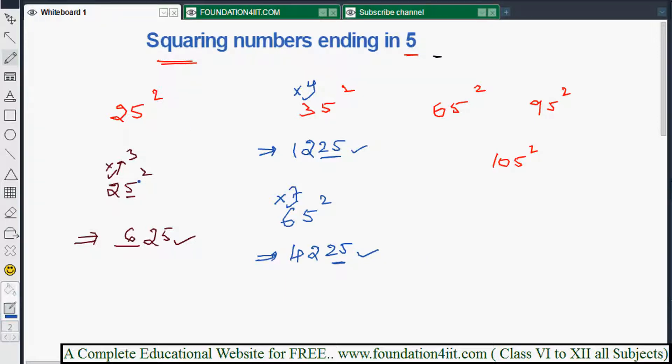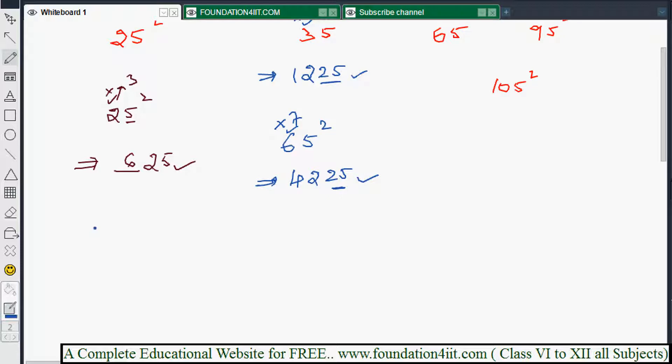So this way we can do even not only 2 digit, 3 digit numbers also. 95 square. So what we will write? First digit is 9, 9 into next number is 10. So 9 tens is 90, because whatever the number into the next number of this, 10. So 9 into 10 is 90. Then just add 25 in units and tens place. So 9025.